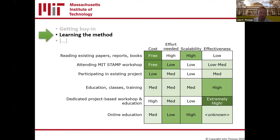If your company is already using STAMP, STPA, or CAST, you could just participate in an existing project - that becomes self-sustaining. If you're not in that situation, the last several rows offer ways to kickstart brand new competency. Education classes or training - cost goes up but these are very effective. A dedicated project-based workshop where you spend a week or more on your own problem with an STPA expert is the most effective approach I've ever seen. Online education is being developed but we don't yet have data on how effective it will be.